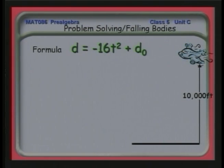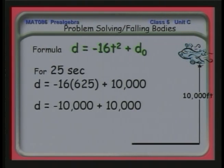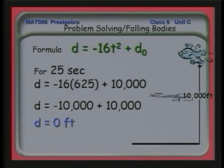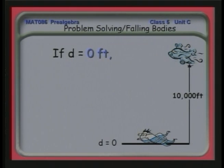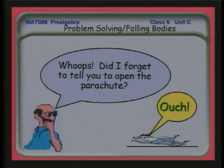Now let's look at the case for 25 seconds of falling. Substituting 25 into t: 25 squared is 625, and minus 16 times 625 is minus 10,000. So d equals zero. It looks like after 25 seconds of falling without a parachute, we're right at ground level — D equals zero. That means the skydiver hit the ground. Perhaps it would have been good to open that parachute.